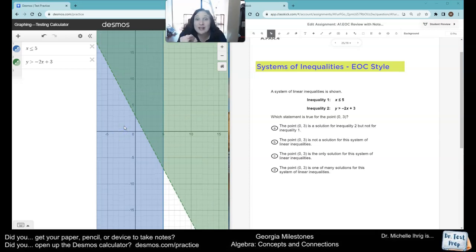Now, notice how they're trying to trick you. Do you see how the green is a dotted line? That means if it is touching the dotted green line, it is not correct. It can only touch a solid line or the double shaded region.